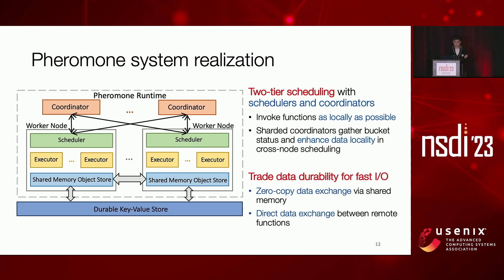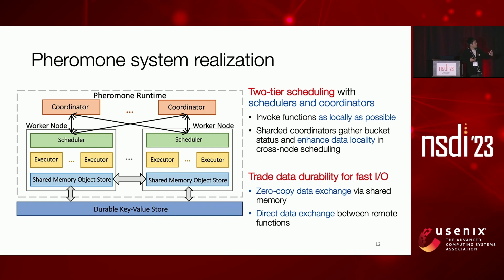Another design choice is that we trade data durability for fast I/O. In each worker node, we run a shared memory-based object store to cache intermediate objects in the data buckets. This allows local function executors to efficiently share intermediate objects without data copy. We also allow direct data exchange between remote functions without going through remote storage. Of course, if data needs to be persisted, the worker can synchronize with a durable remote store.